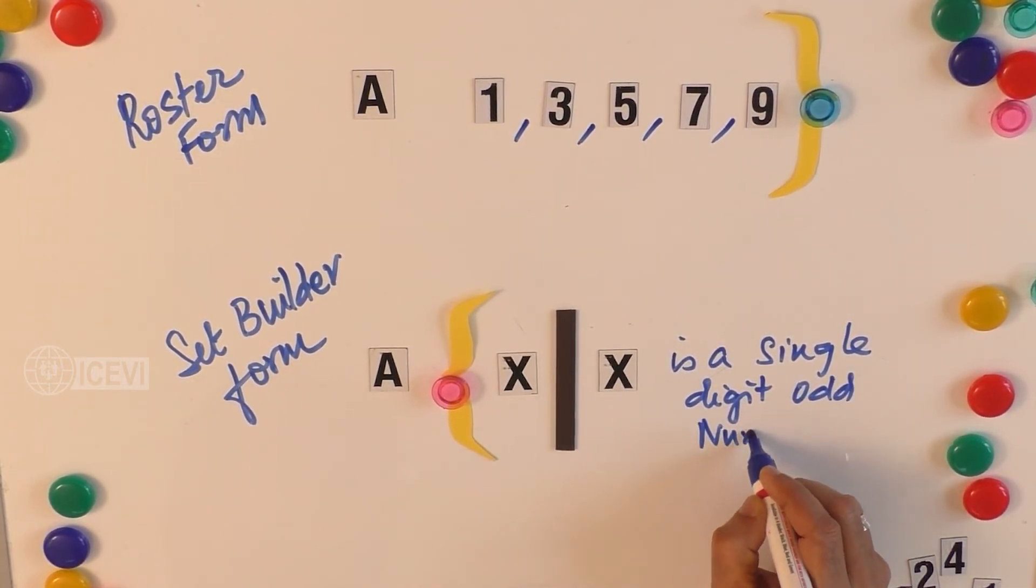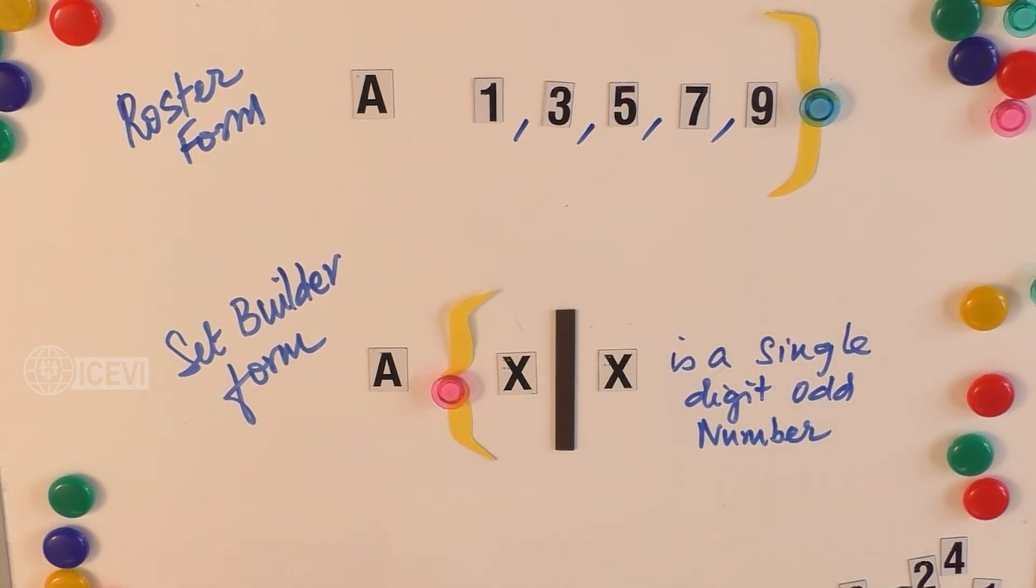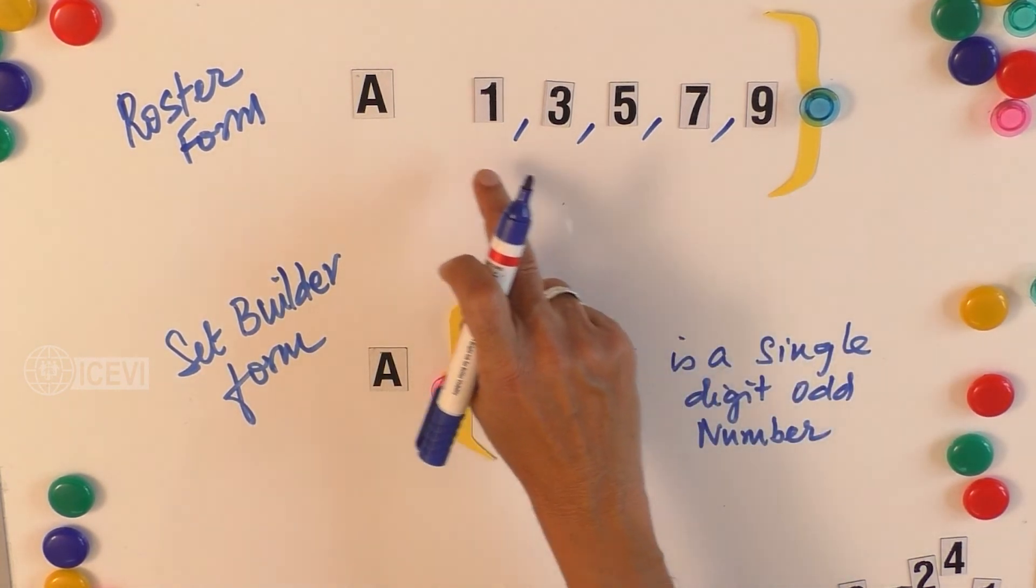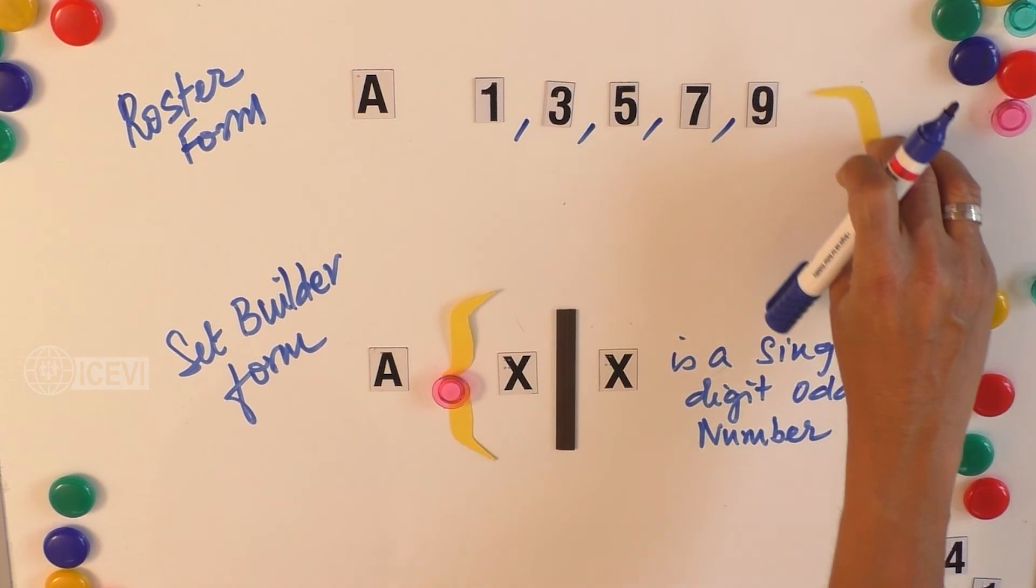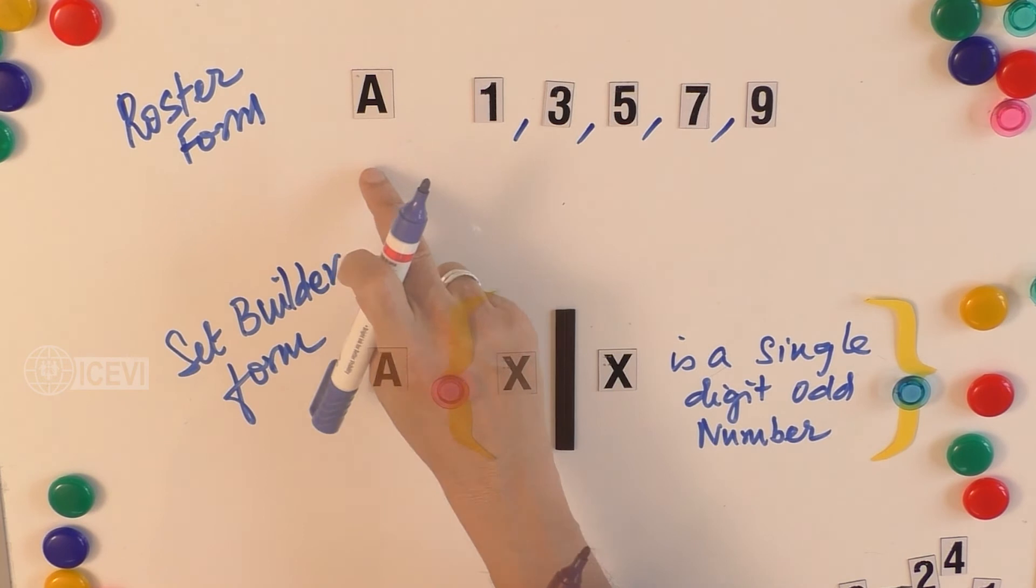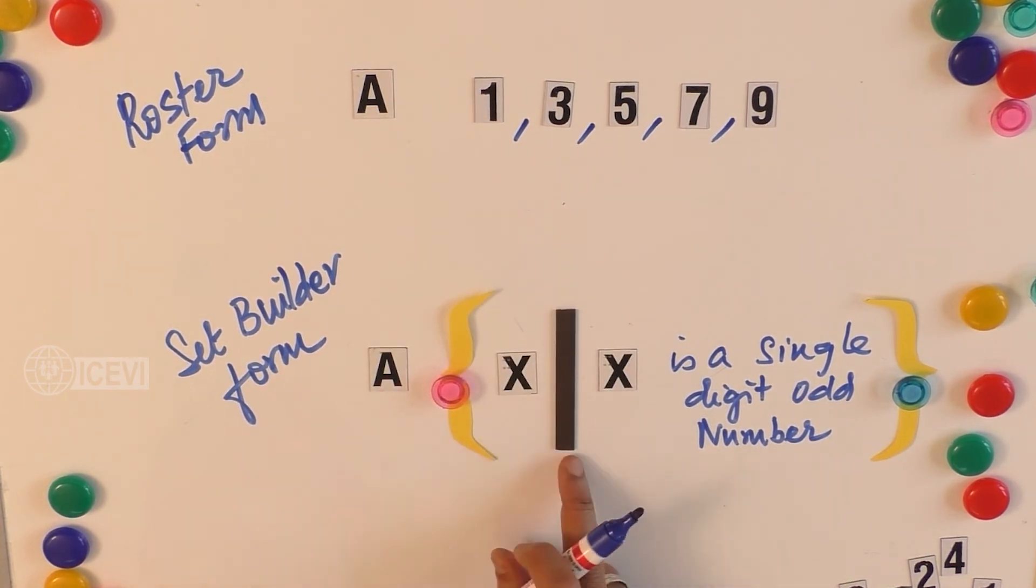What we have done here is we have given the description for the elements of the set. Earlier in the roster form, we mentioned the entire set with commas in between the elements. But in the set builder form, we have not done that. We have just mentioned X. X is a parameter and then we have given a description for X as it is a single digit odd number.